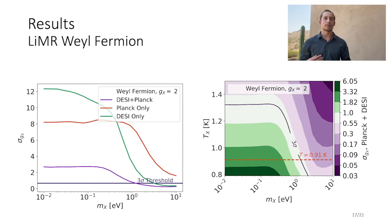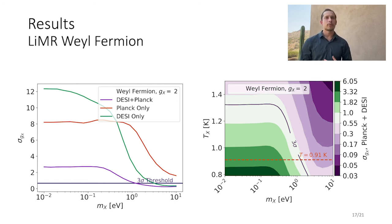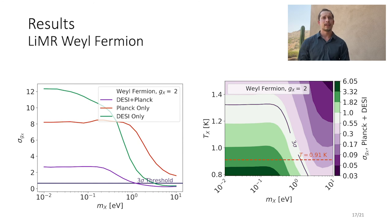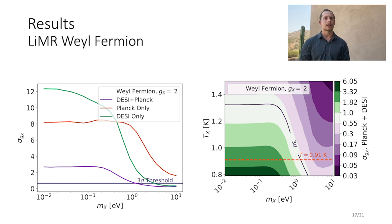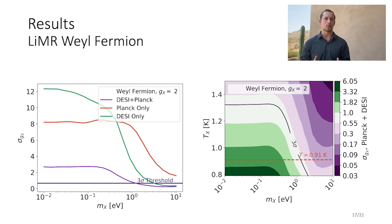We move on to perform our analysis over the parameter space of generic light but massive relics, spanning 0.91 to 1.5 Kelvin in temperature and 10 meV to 10 eV in mass. In this analysis, we perform a Fisher forecast in which we fix combinations of mass and temperature and vary the relic degrees of freedom in addition to the standard cosmological parameters and the sum of neutrino masses. In general, we found that the next generation of surveys is capable of observing or ruling out LEMURs at 3-sigma significance for all masses above order 1 eV. Even the presently available BOSS and Planck datasets were able to jointly constrain relics at this significance above a few eV for all but scalar bosons.